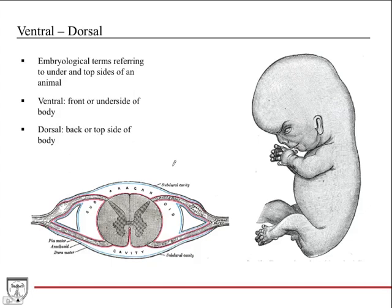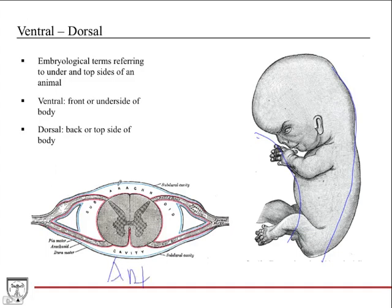Ventral and dorsal are similar embryological terms used fairly frequently to describe front or back. You need to understand the origin of these terms. In a developing embryo, ventral is the underside and dorsal is the back or top side. In a cross-section of the spinal cord, you'll see references to the ventral root and dorsal root, the ventral horn and dorsal horn.